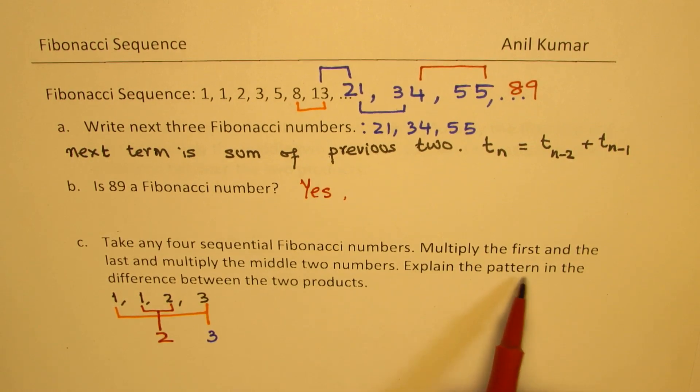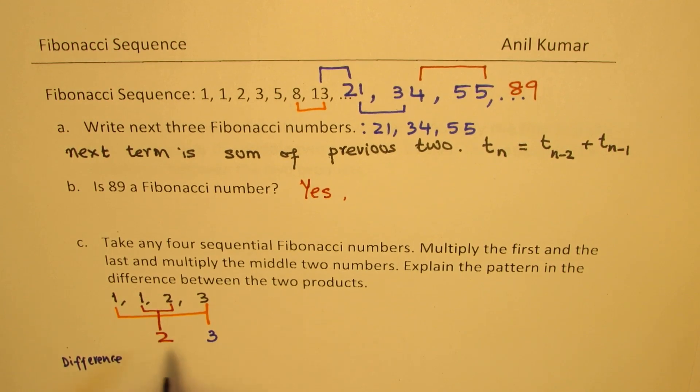Now, explain the pattern in the difference between the two products. What is the difference? Let's write it down. The difference between 2 and 3 is 1. Three is greater.